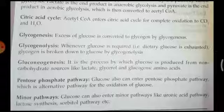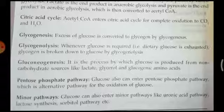In glycogenesis, excess glucose is converted to glycogen. Whenever glucose is in excess in the body, that process is called glycogenesis. Glycogenolysis — the second part 'lysis' indicates breakdown. Glycogen plus lysis equals glycogenolysis. The breakdown of glycogen to glucose is called glycogenolysis; it is a catabolic pathway. Whenever glucose is required during decreased glucose levels, glycogen stored in the body is converted to glucose by glycogenolysis.